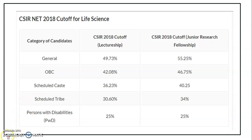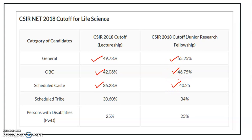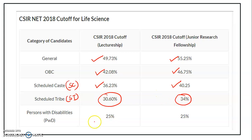For 2018 life science cutoff marks: JRF unreserved was 55.25% and LS was 49.73%. For OBC, JRF was 42.02% and LS was 46.75%. For SC candidate, JRF was 40.25% and LS was 36.25%. For ST candidate, JRF was 34% and LS was 30.60%. PWD was 25% for both.